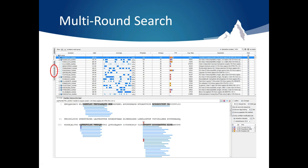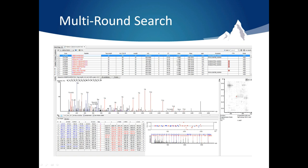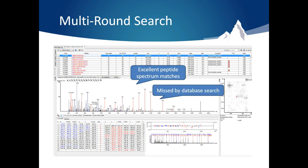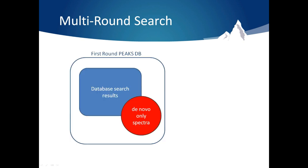This tab contains spectra that cannot be matched by PEAKSDB, PEAKSBTM, or SPDR. However, using de novo sequencing, these spectra can still have excellent peptide spectra matches. This makes us question why these good peptides are missed by database search. Multi-Round Search gives us the opportunity to answer that question.